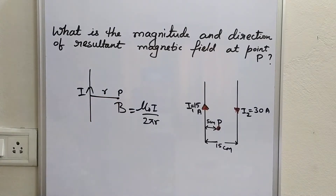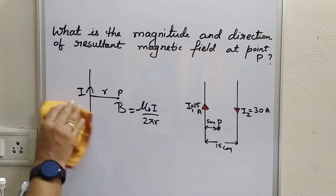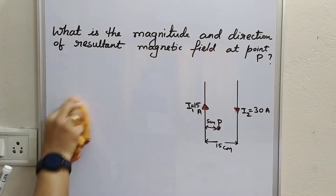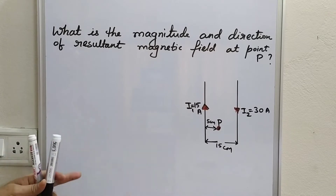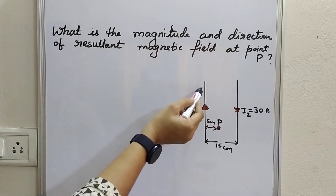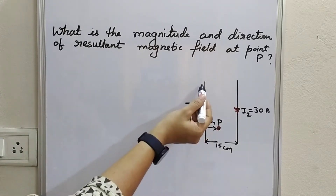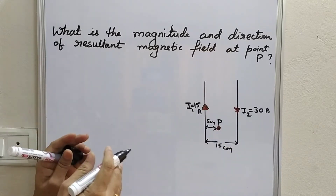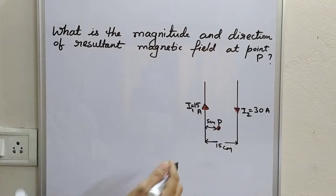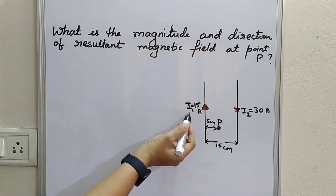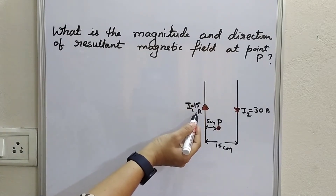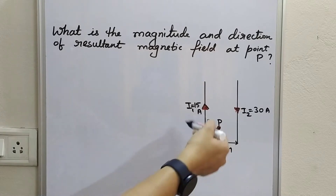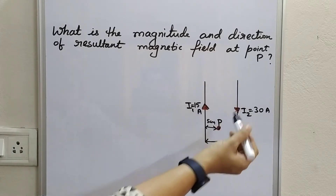According to this question, we are given two parallel conductors in which the direction of current is opposite. The first conductor has current flowing from bottom to top. The magnitude of current in the first conductor is 15 amperes and the magnitude of current in the second conductor is double that, which is 30 amperes.